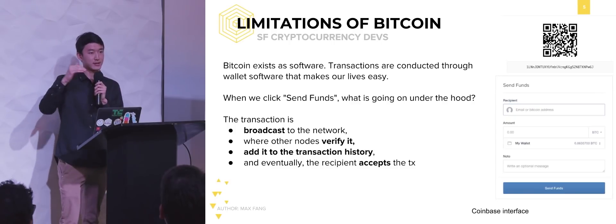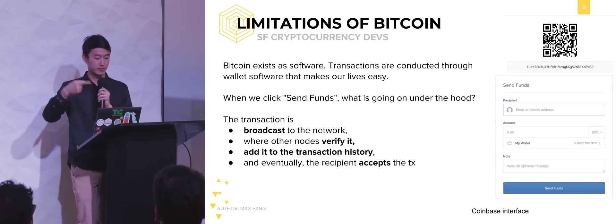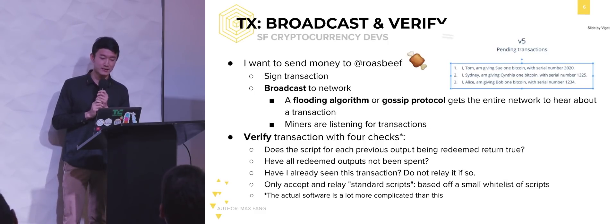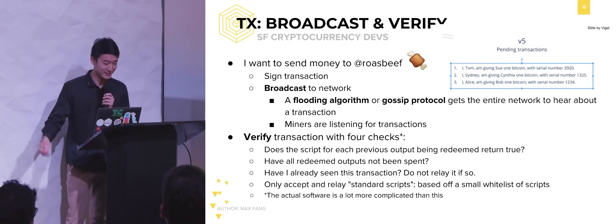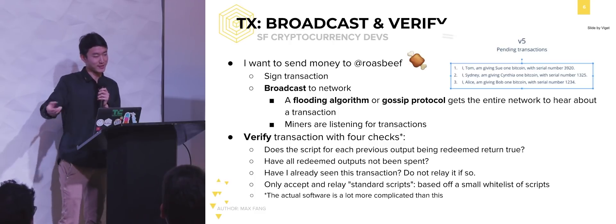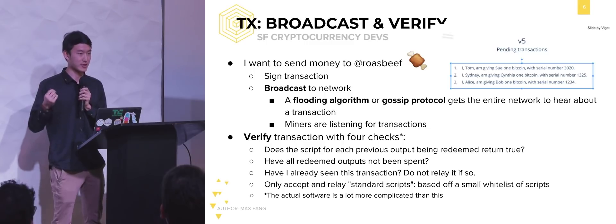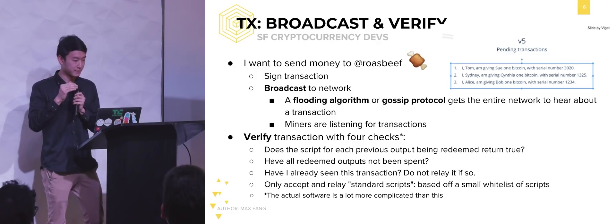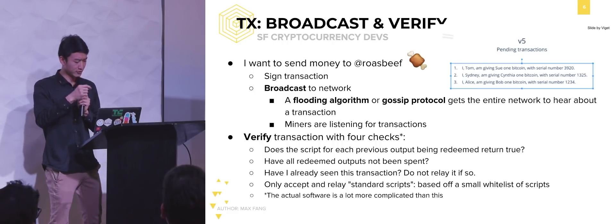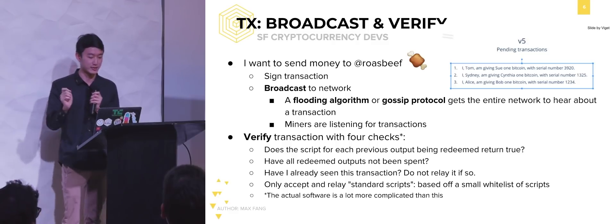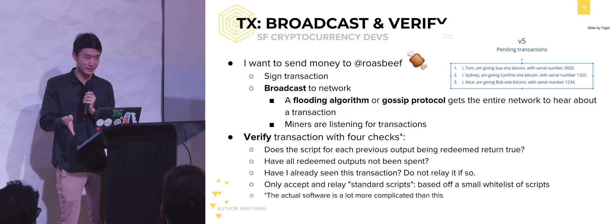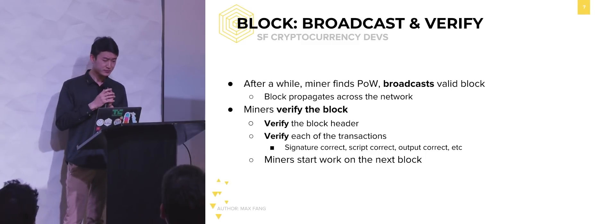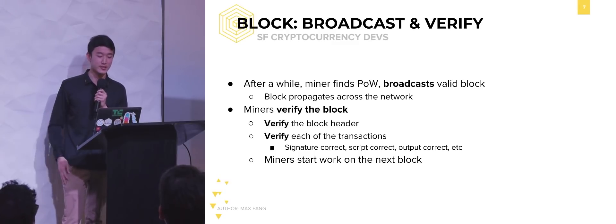We have to undergo this expensive consensus process to add it to the transaction history, where now every node stores this on their computer, and eventually whoever I'm trying to pay is able to accept this transaction. You can break it down into: broadcast, verify, add to history, and accept. There's a lot of stuff going on. When you sign this transaction and it's broadcast, you're incurring all these network costs where the transaction has to be flooded through the network. Every node must verify the scripts and check that all outputs haven't been spent, undergoing disk I/O and so forth.